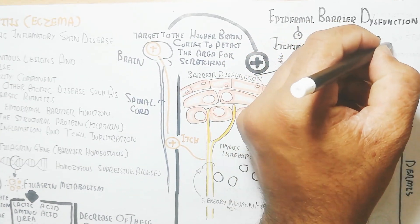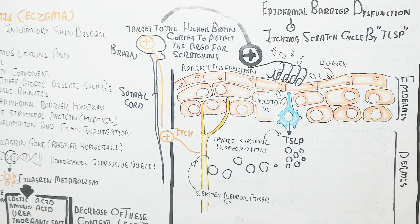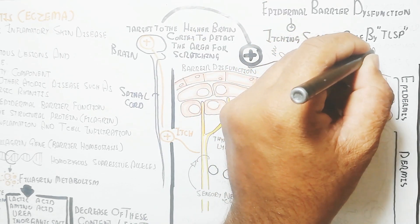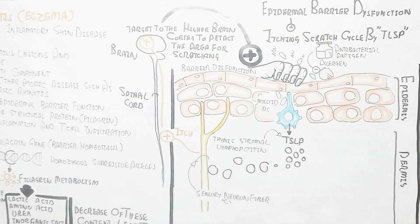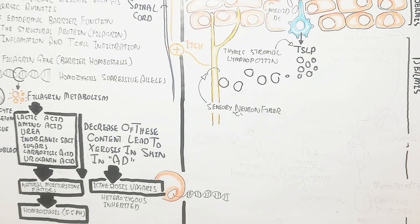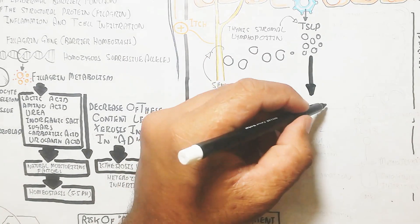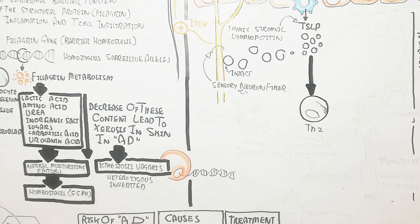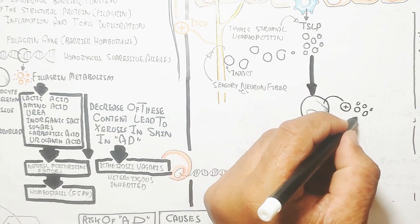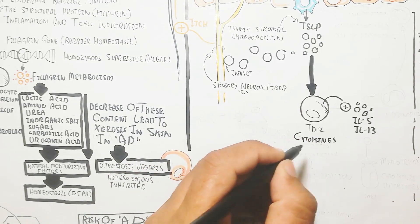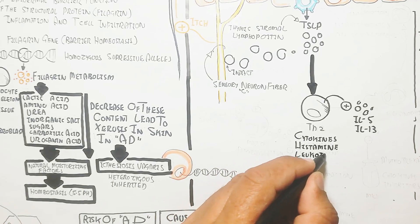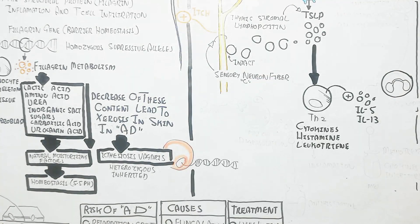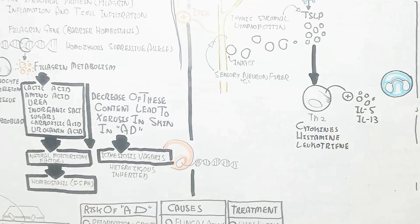Antifungal or antibacterial lotions and other atopic lotions can be applied to cover infection progression. T helper type 2 cells are also triggered via TSLP. Thymic stromal lymphopoietin triggers T helper 2 cells to produce interleukins 4, 5, 13, and 31. Cytokines, histamine, and leukotriene are produced from mast cells.